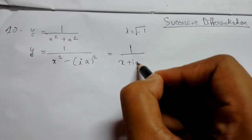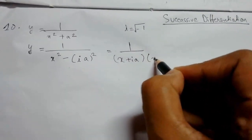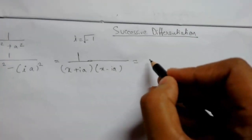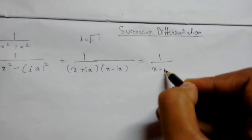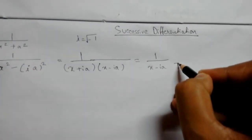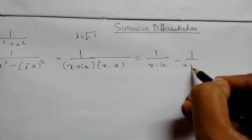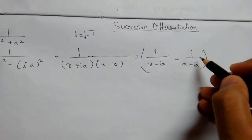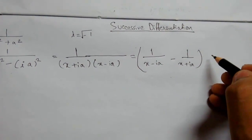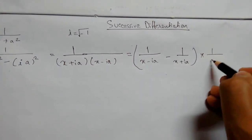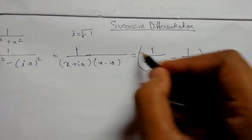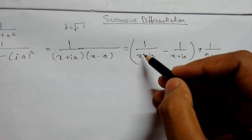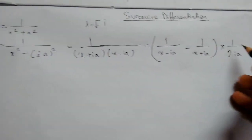We factor as (x + iota·a)(x − iota·a), then split into partial fractions. This gives 1/(x − ia) minus 1/(x + ia), and doing this causes a term of 2ia to appear in the numerator, so we divide by 2ia to arrive at the correct form for applying the general nth derivative formula.